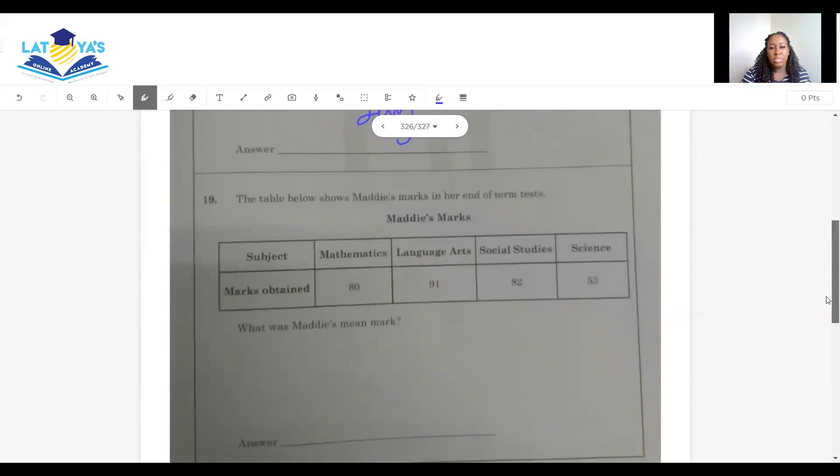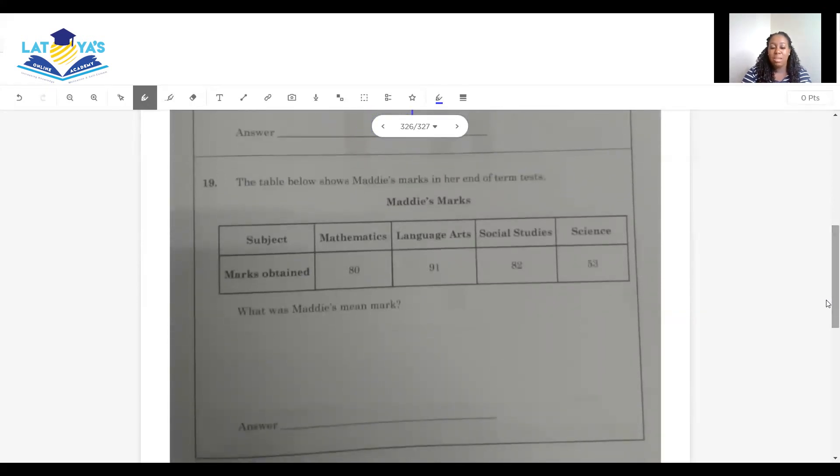The table below shows Maddie's marks in her end-of-term test. The subjects: mathematics, the marks obtained, 80 in language arts, 91, social studies, 82, science, 53. What is Maddie's mean mark? Now, to get Maddie's mean mark, we'll have to add all her scores and divide by how many marks we have here? 1, 2, 3, 4. So we have to add, divide by 4, and we will know her mean. So here we have 80 plus 91 plus 82 plus 53.